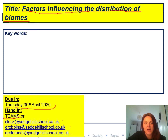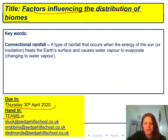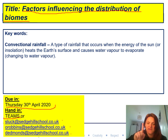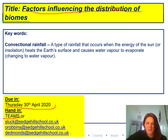The first keyword is convectional rainfall. This is a type of rain that occurs when the energy of the sun heats the earth's surface and causes water vapour to evaporate. So when the sun shines down on the earth it makes all the water on the earth's surface evaporate and go up into the sky.